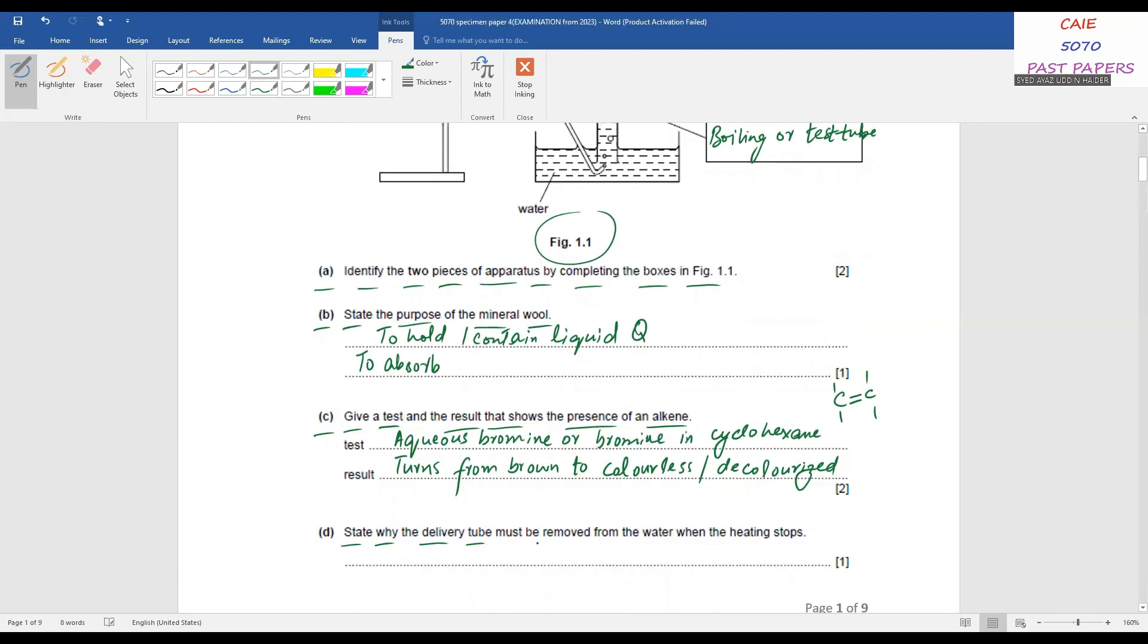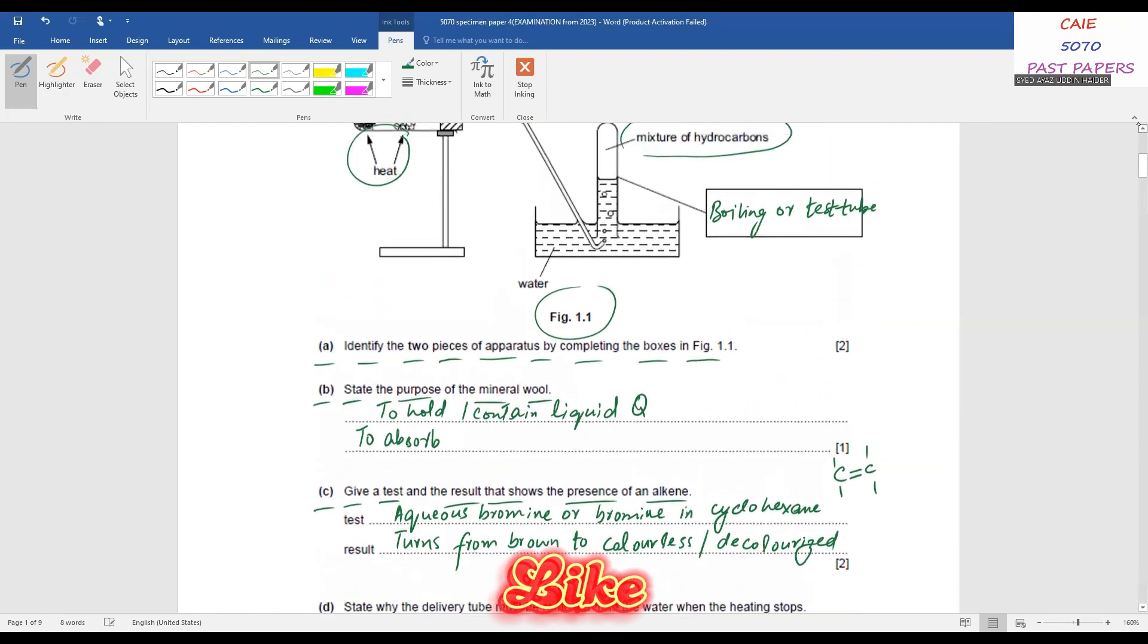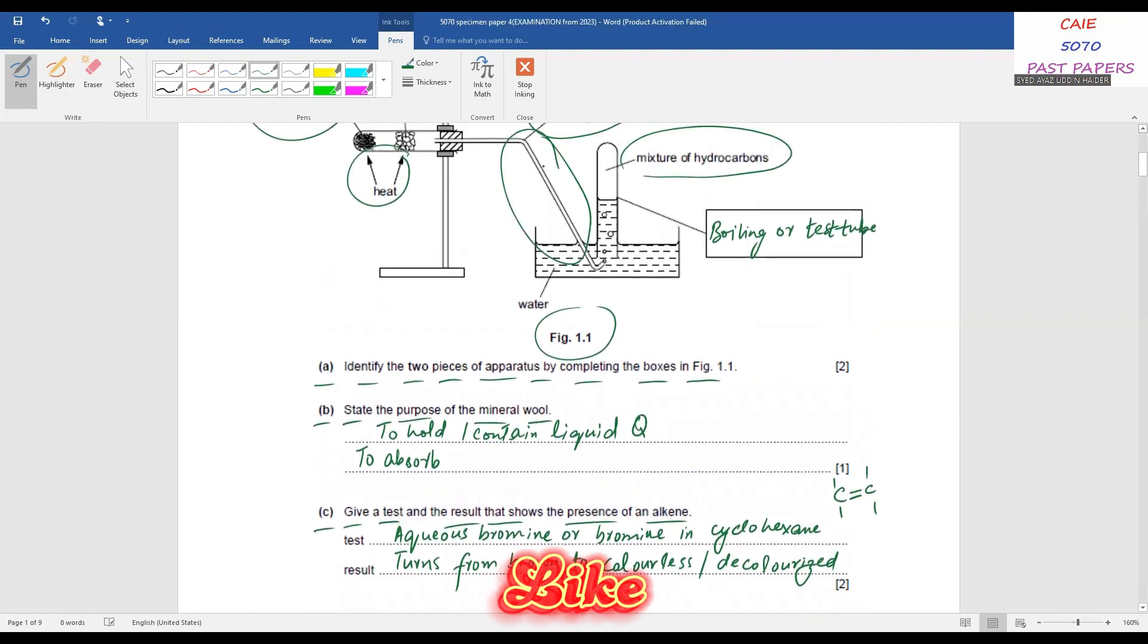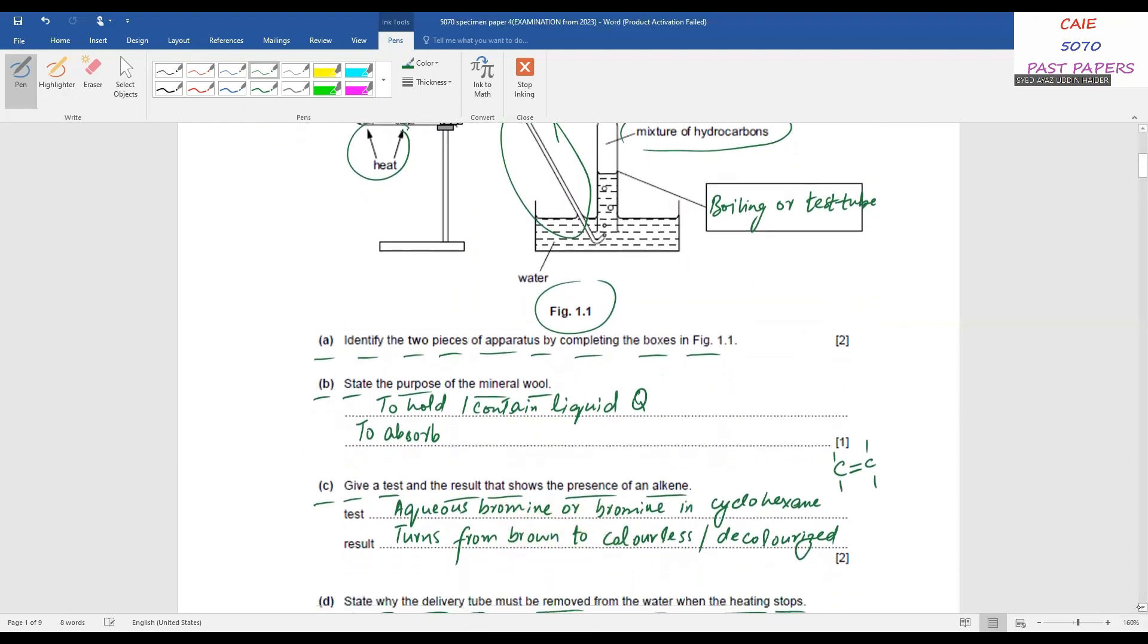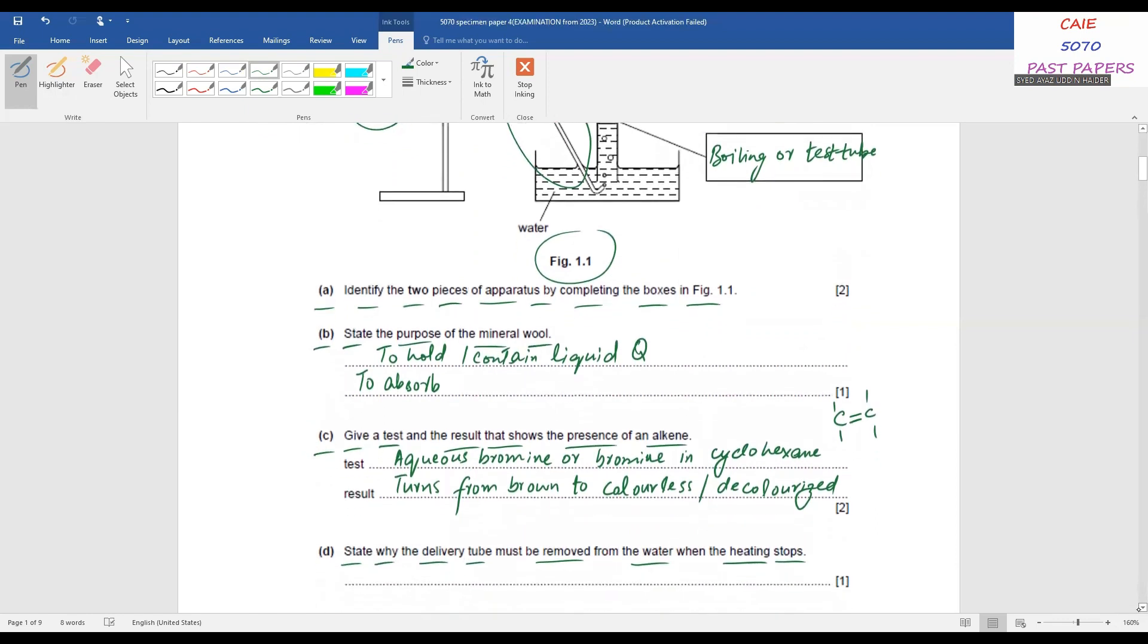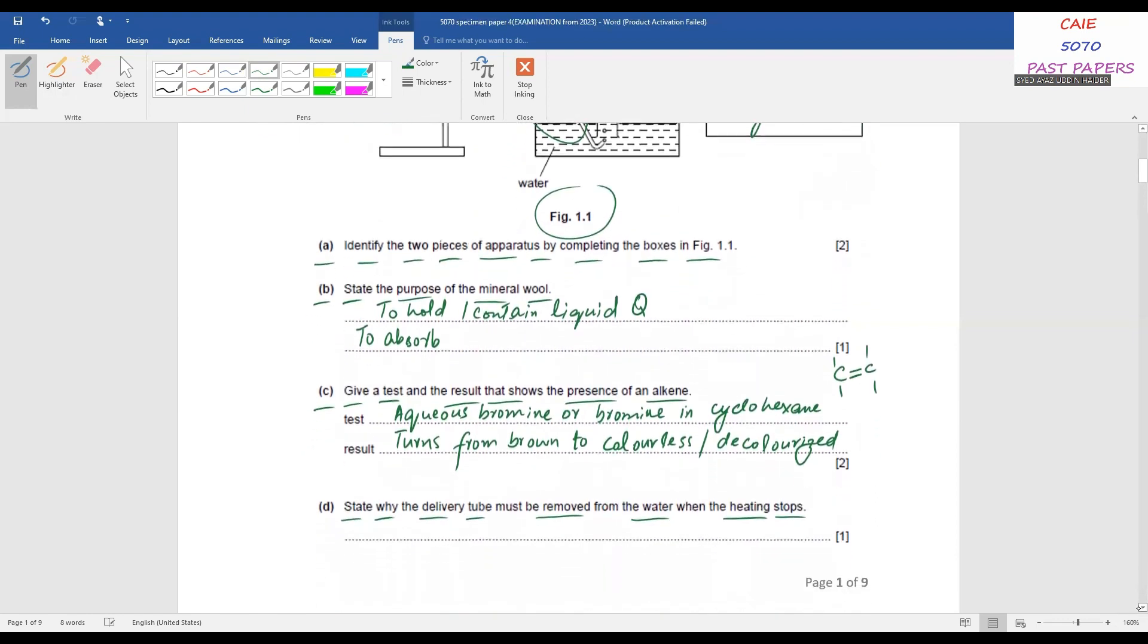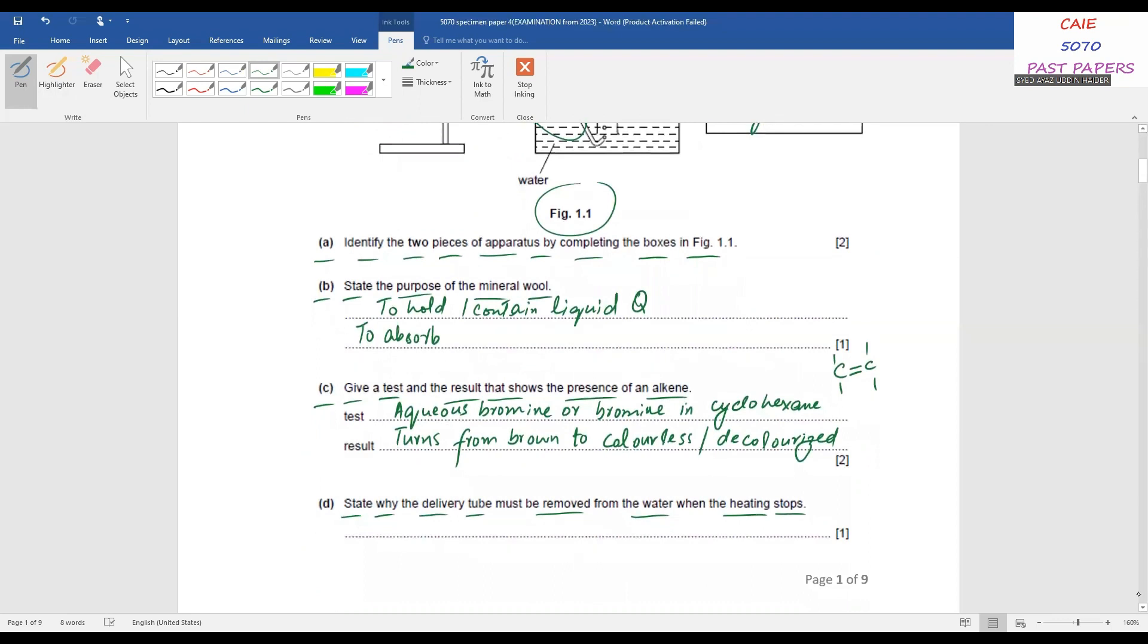State why the delivery tube must be removed from the water when the heating stops. You have to remove this delivery tube once the heating stops because the reason is that the test tube or boiling tube sucks back the water. It sucks back the water and you may lose the gases obtained. So you will write to prevent suck back of water.